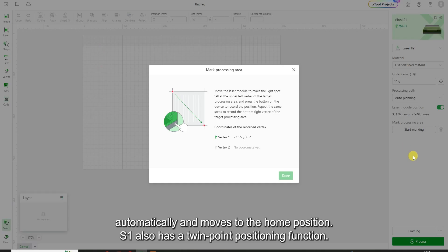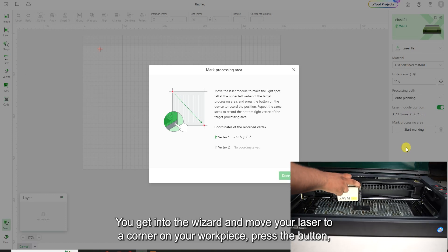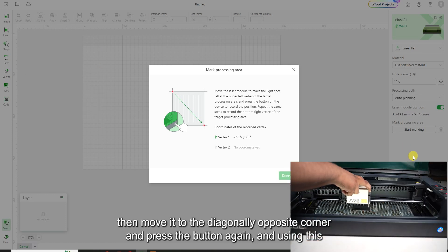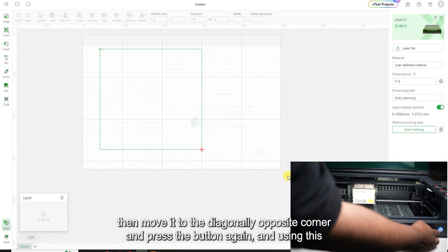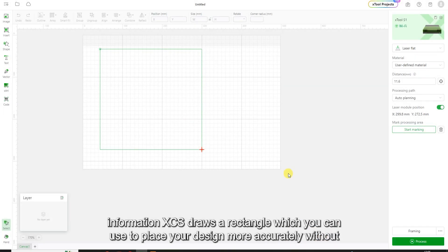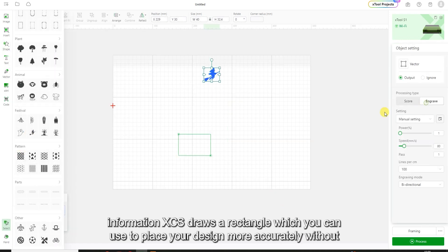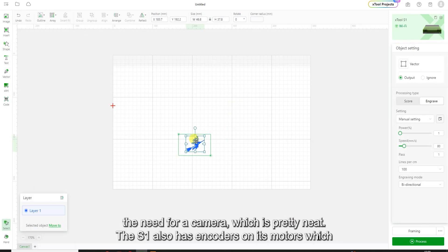S1 also has a twin point positioning function. You get into the wizard and move your laser to a corner on your workpiece, press the button, then move it to the diagonally opposite corner and press the button again. And using this information, XCS draws a rectangle which you can use to place your design more accurately without the need for a camera, which is pretty neat.